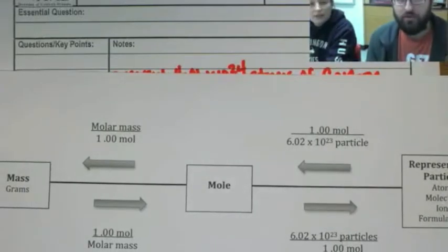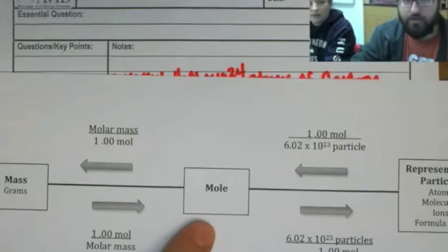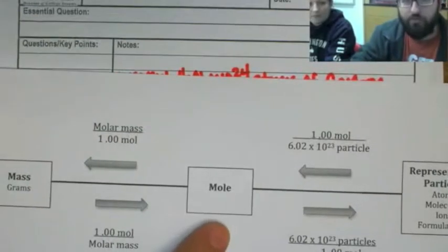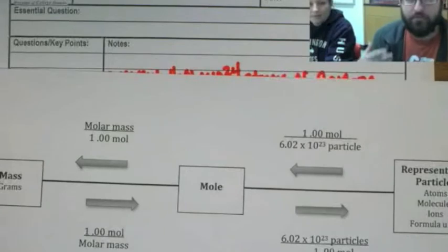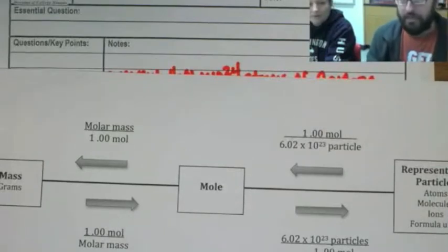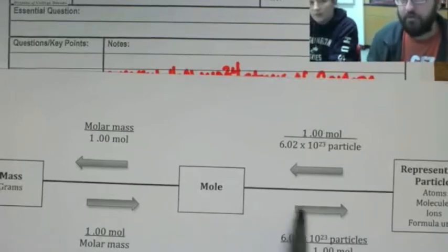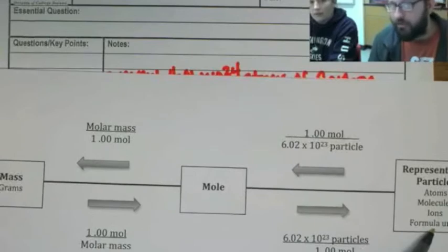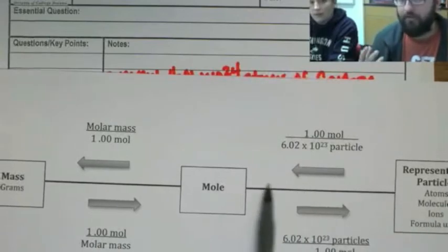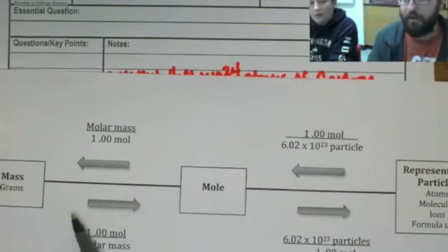So this is showing you how we've got a mole in the middle here, right? Yeah. We've got mass on one side and we've got representative particles like atoms and molecules on the other. Okay. So that means if I have the mass, I can use the mass to tell me how many atoms or molecules I have. So I can follow it this way? Uh-huh. Or you can follow it the other way. If I have how many atoms I have, I can figure out how much mass is there.